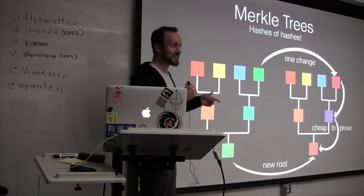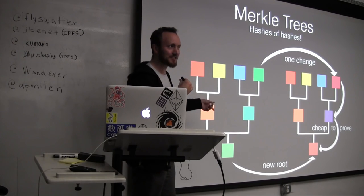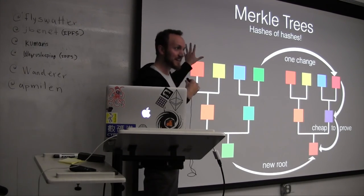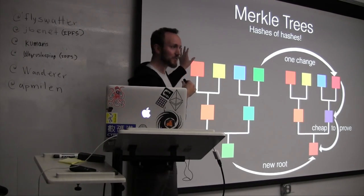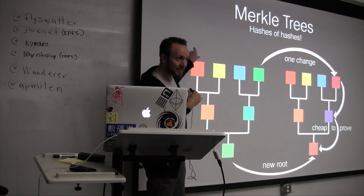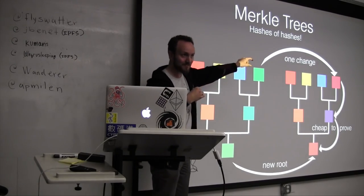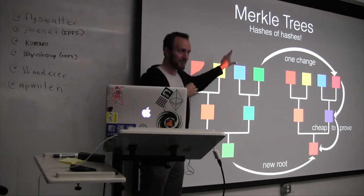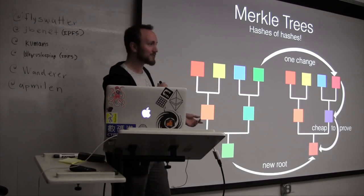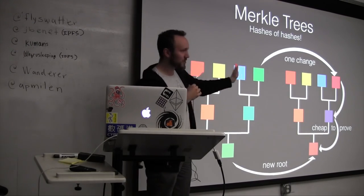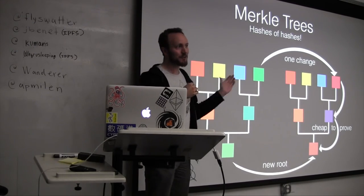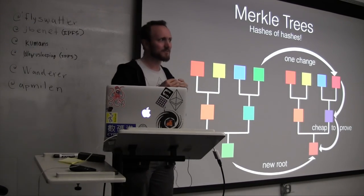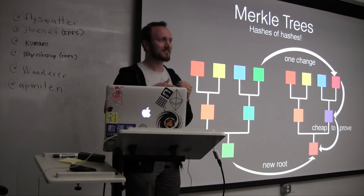There was a recent announcement — Apple's going to use their new file system based on Merkle proofs, because they'll be able to tell as soon as a single file is corrupted. If you can't prove the root hash, then you know a file's wrong, and you can just go through and figure out exactly which one. So it's a really useful data structure.